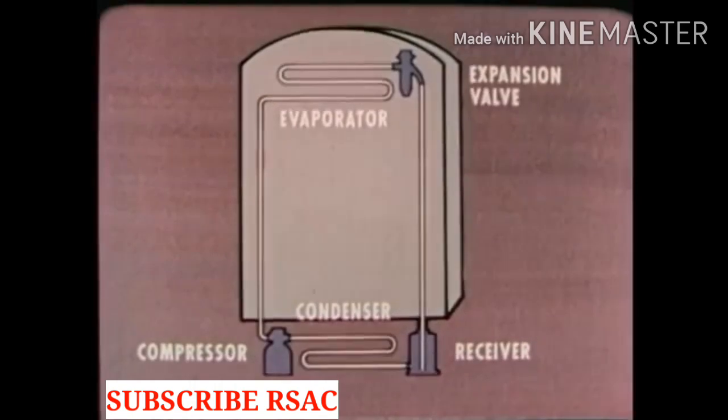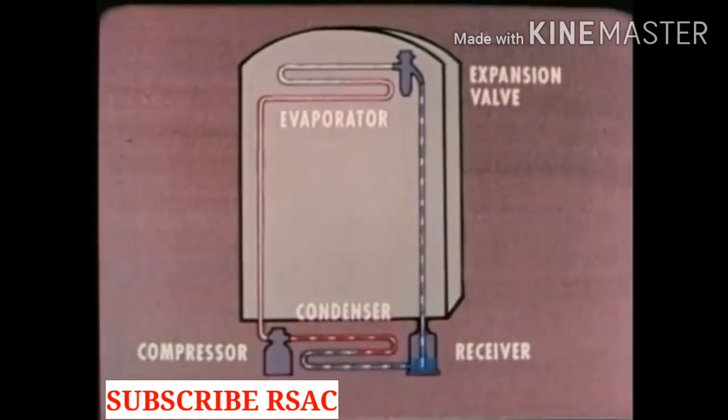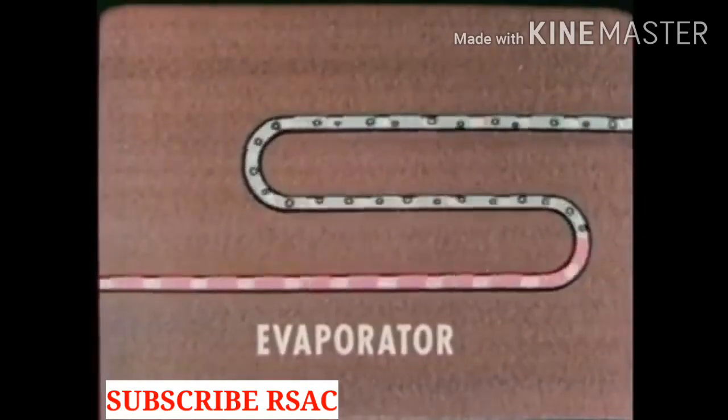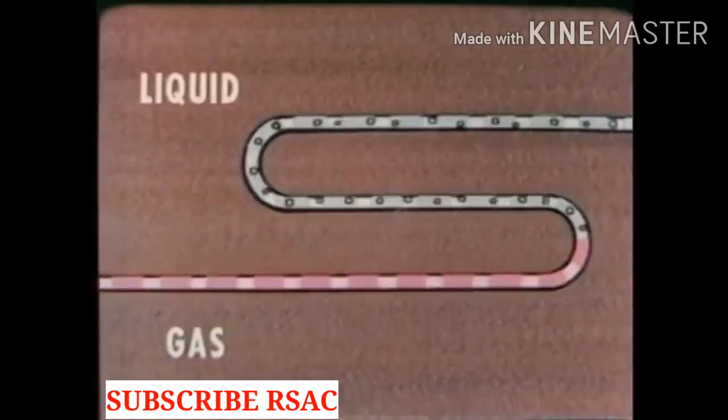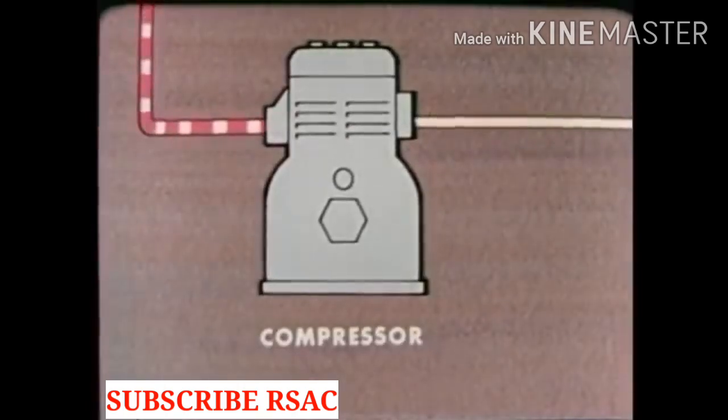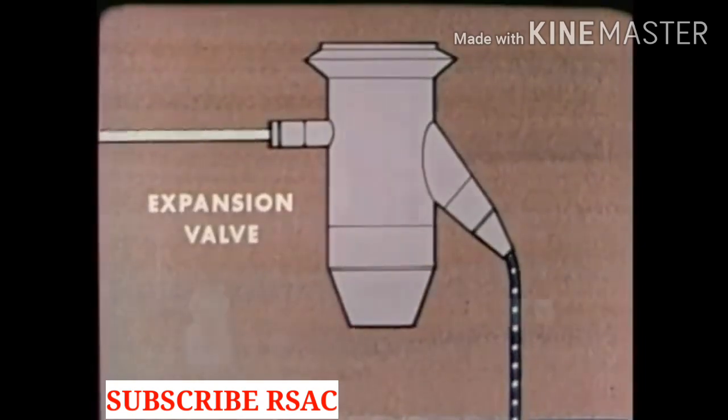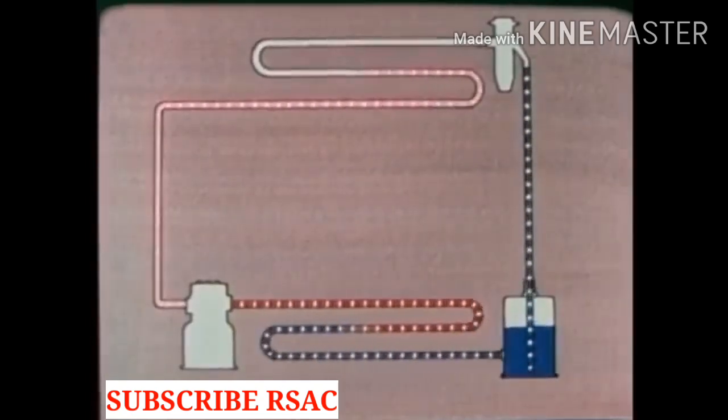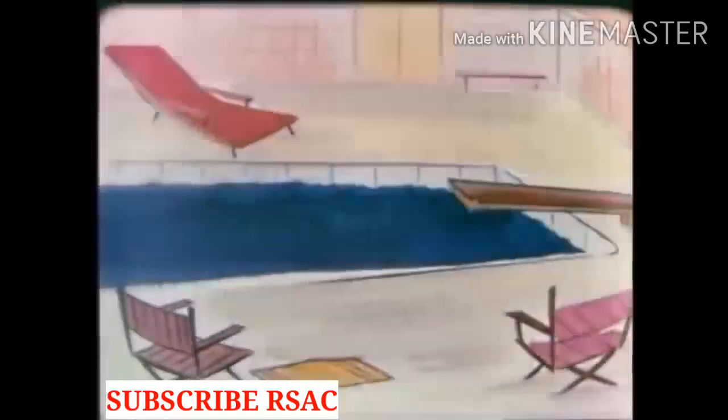Also in the system are the compressor, which is a pump, the expansion valve, and in many systems the receiver, a kind of storage tank. A chemical substance called the refrigerant flows through the system. It's the refrigerant that picks up BTUs of heat from inside the box and discards them outside. In the process the refrigerant changes from a liquid to a gas, then in the condenser it changes back to a liquid. At the same time the pressure increases in the compressor and decreases in the expansion valve. Before you can understand how the system works you must learn why and how these changes take place. That means learning some basic principles concerning heat.